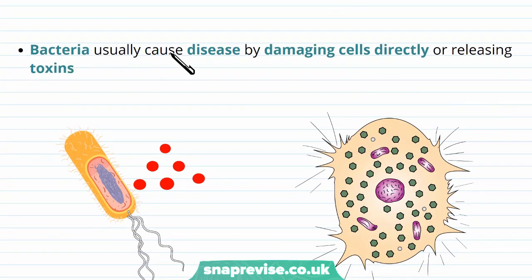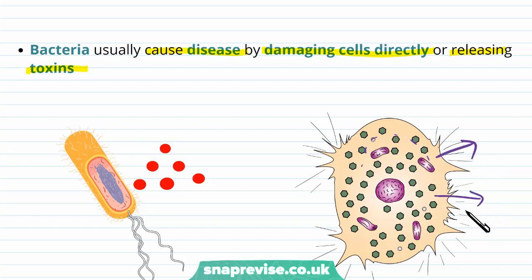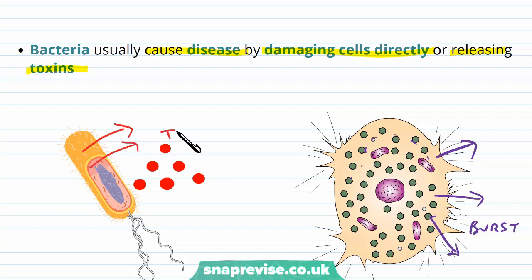Bacteria can be very harmful because they cause disease by damaging cells directly or releasing toxins. They can either replicate inside cells and become so large in number that they burst out, or they can release particular molecules known as toxins, and it's these toxins which can cause harm to our cells as well.